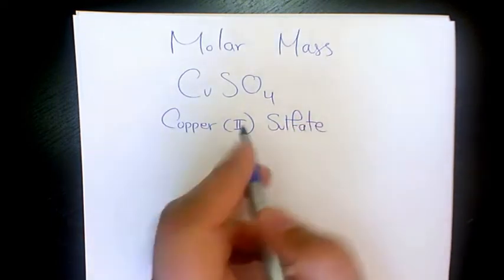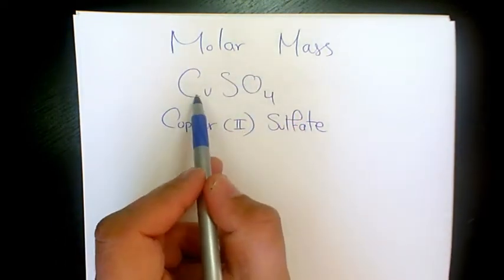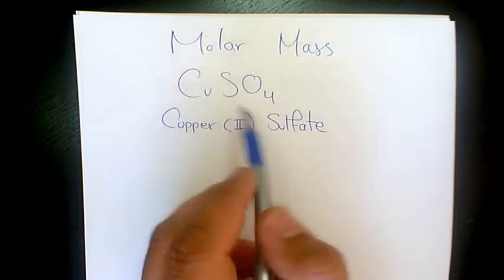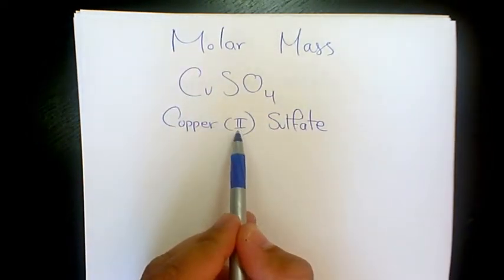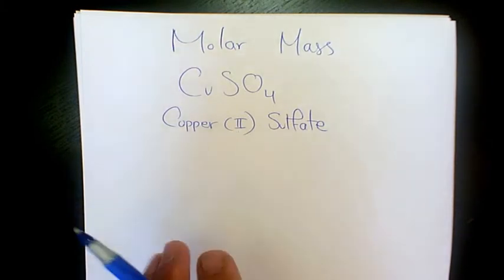Sulfate is a polyatomic ion, SO4^2-. And Cu in this case is going to be plus 2 because the whole thing is 0. So that's why we have Copper(II) because Copper has more than one oxidation state.